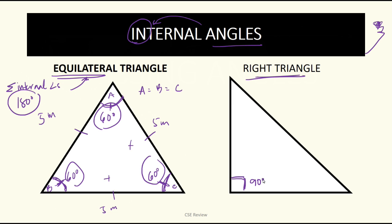Pag sinabing right triangle naman, ibig sabihin nun, one of the angles is a right angle or automatic 90 degrees. Now, here's the thing. If right triangle ang pinag-uusapan and one side is equal to the other side, ibig sabihin pareho sila ng haba, kunyari ito ay, kunyari lang, 7 meters, ito ay 7 meters din.